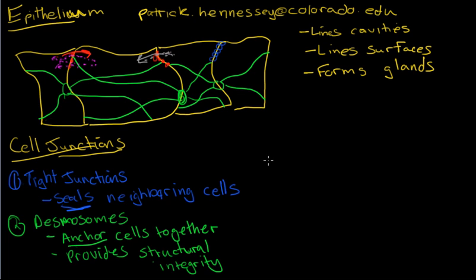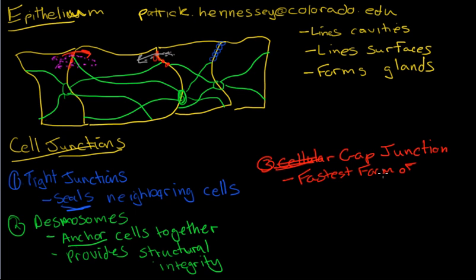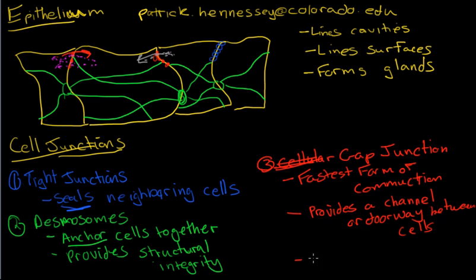And again, those are called gap junctions. And it's for cellular communication, or I think that's the best way to think about it, is cellular communication. When you get into more nervous system or muscular junctions, you'll see that these gap junctions are the fastest form of communication between cells. So it's faster than a neuron firing, and provides a channel or doorway between cells. This makes cytoplasms continuous between neighboring cells.